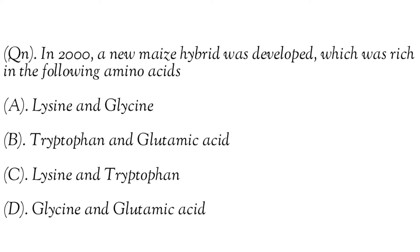Next one: in 2000 a new maize hybrid was developed which was rich in which of the following amino acids? Option A - Lysine and glycine, Option B - Tryptophan and glutamic acid, Option C - Lysine and tryptophan, Option D - Glycine and glutamic acid. Easy one, and the right answer is Option C: Lysine and tryptophan.